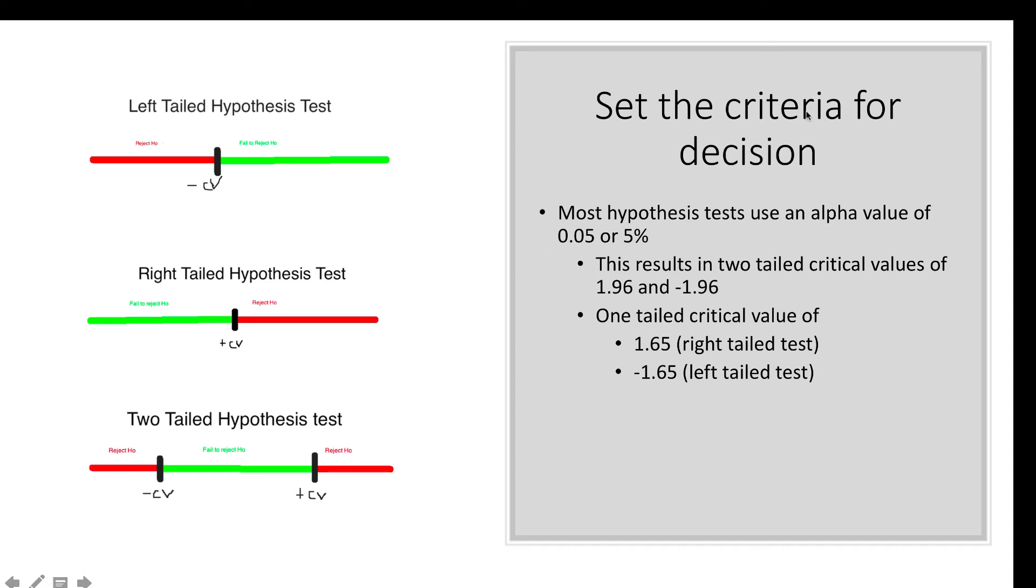Then we're going to set the criteria for decision. These are our cutoff points or what we are going to deem appropriate for supporting the null and the alternative hypothesis.